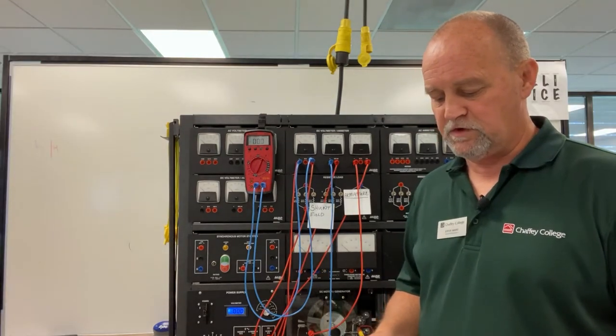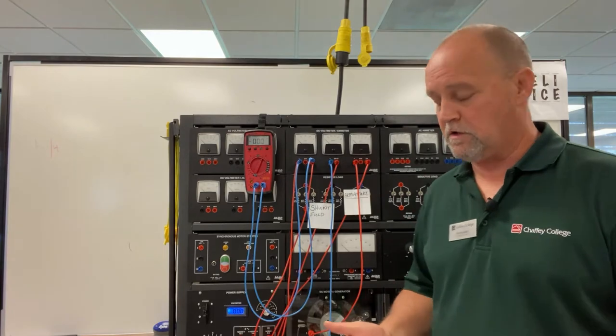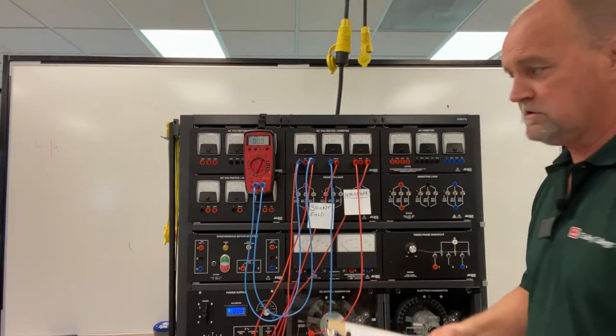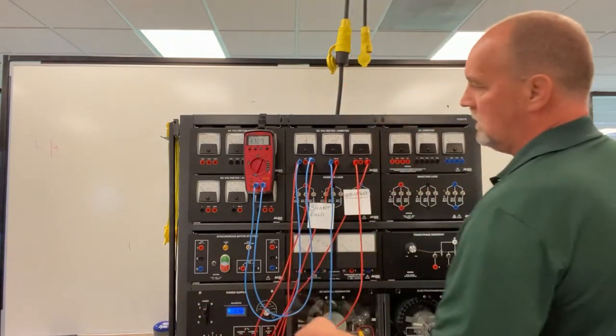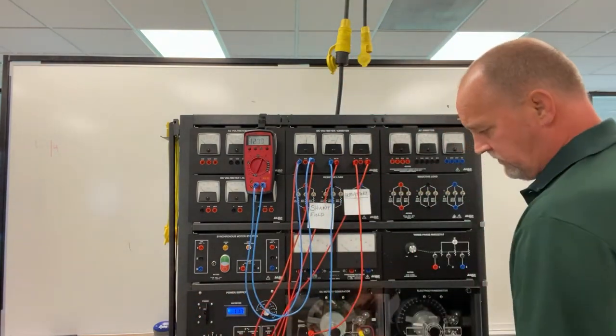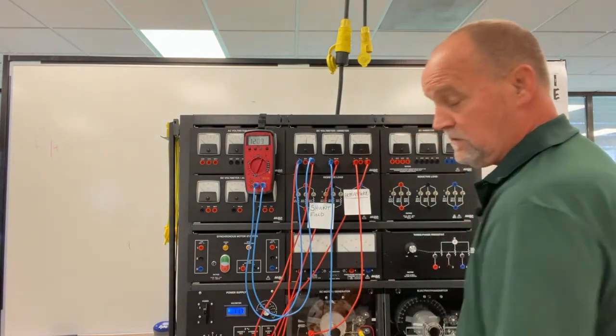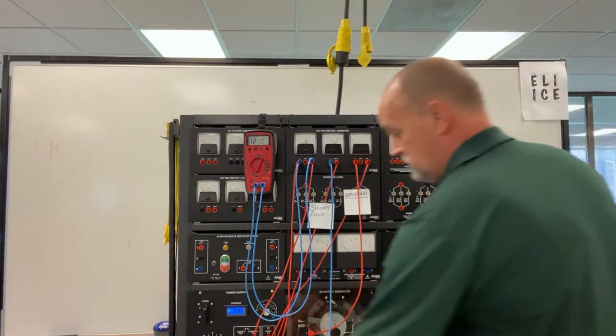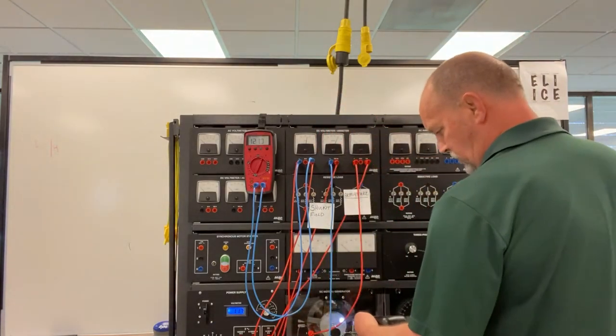And so, on this first reading, they want us to do it with no load. So, we've got the belt taken off. And we just need to make sure that we're seeing 120 volts on our meter. And we are. I've got the shunt field set to 400 milliamps. And really, it just wants an RPM reading off of the motor with no load.